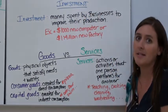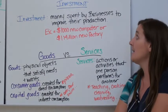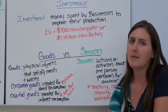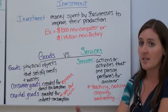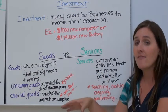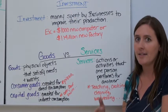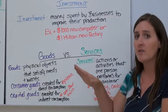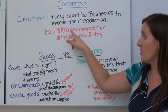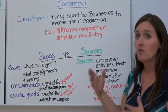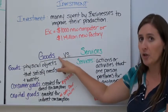The next concept is investment. In economics, investment is the money spent by businesses to improve their production. People often think of stocks or bonds, but in economics, investment means money that a business — like Apple or Nike — spends to improve production. For example, a $1,000 new computer or a million-dollar new factory are investments.